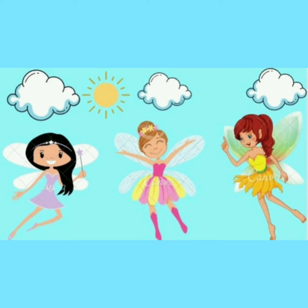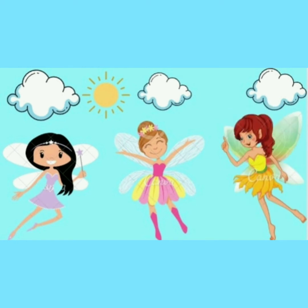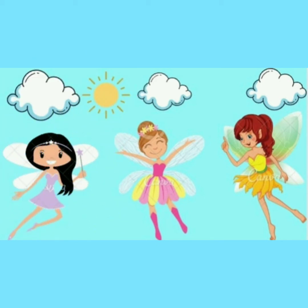Sunny says to her fairy friends, come and play in the sky. So all three fairies — Sunny, Windy, and Raindrop — fly up into the sky and start playing hide and seek. First of all, Sunny hides in the clouds. Then Windy blows the clouds away. And when Raindrop waves her wand at a cloud, it begins to rain. She hides in the shower of rain until Windy blows the cloud away with a laugh.